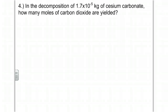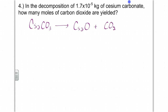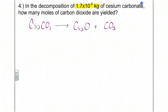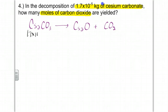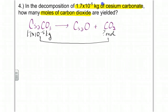Number four: we have cesium carbonate, which yields cesium oxide plus CO2. It's a 1-to-1-to-1 ratio. Our givens are 1.75 times 10 to the negative 5 kilograms of cesium carbonate, and we want to know how many moles of carbon dioxide we'll end up with. So we're stoicing from cesium carbonate to carbon dioxide.